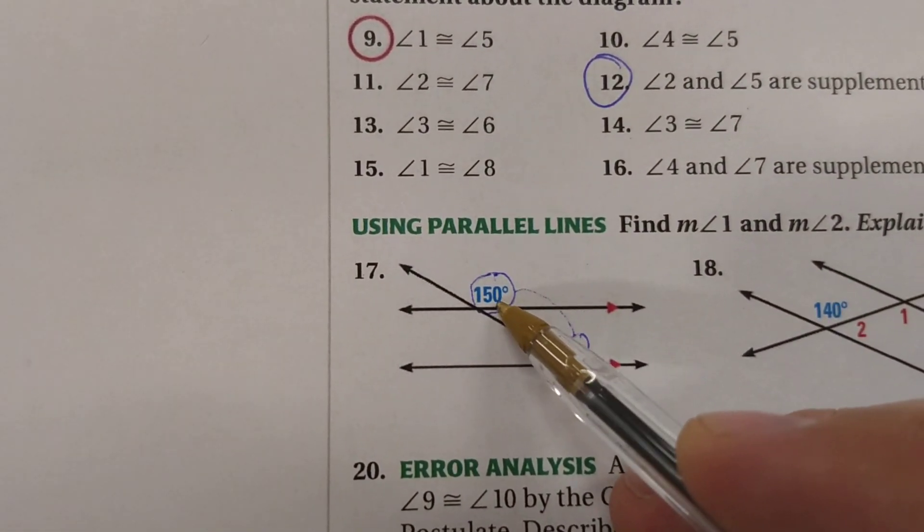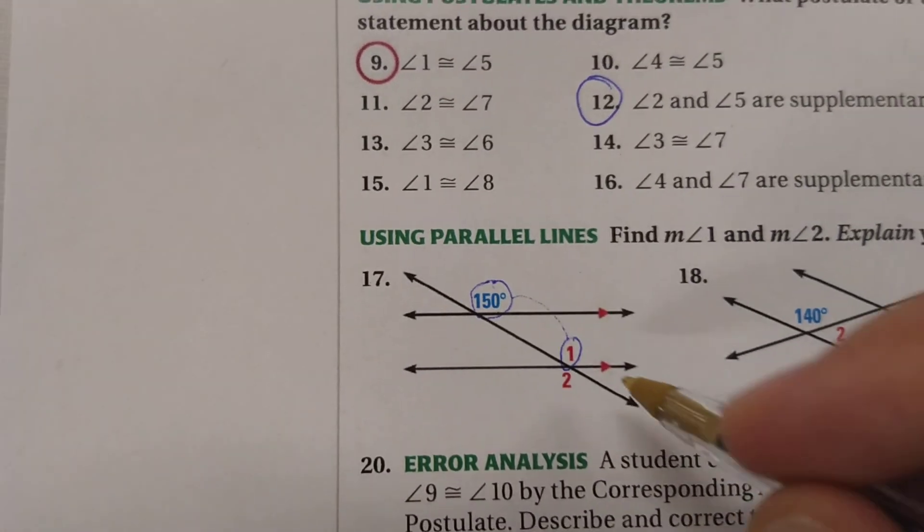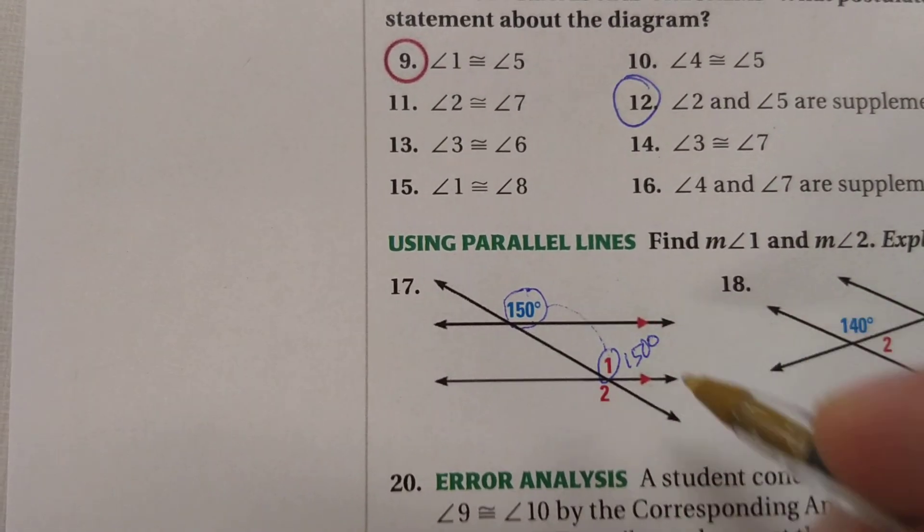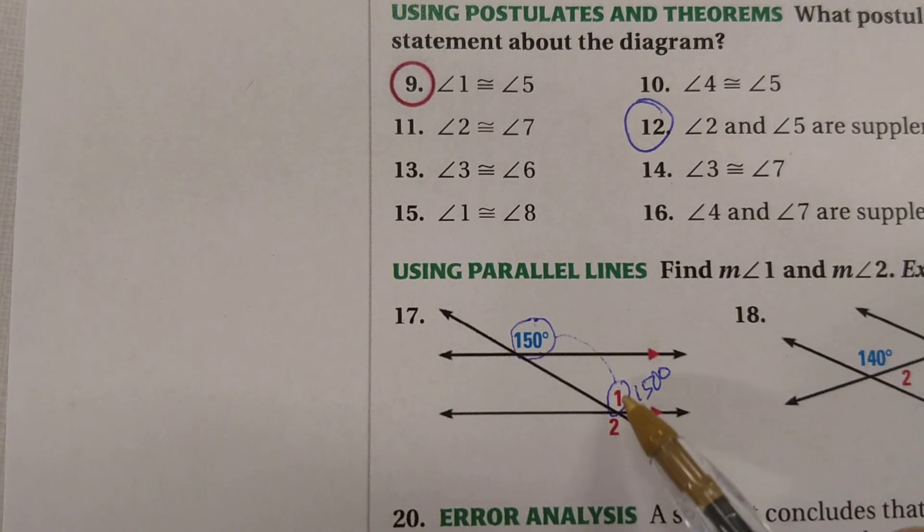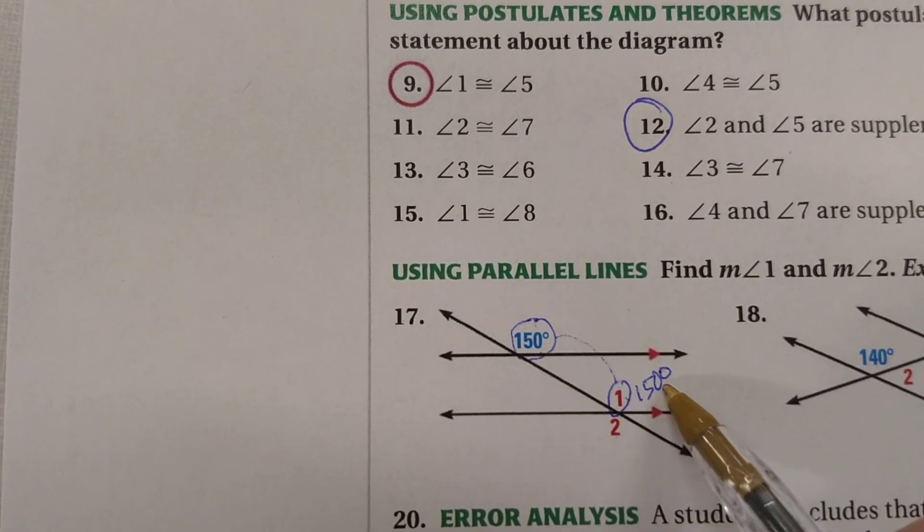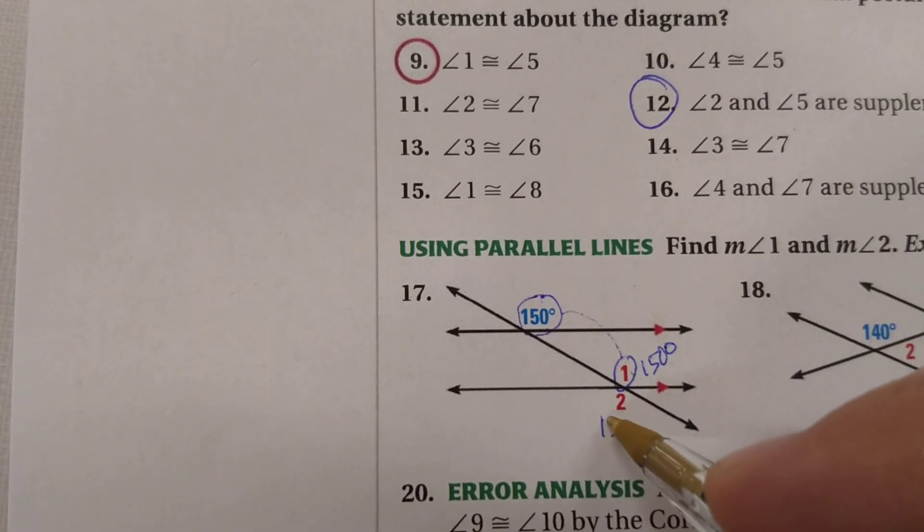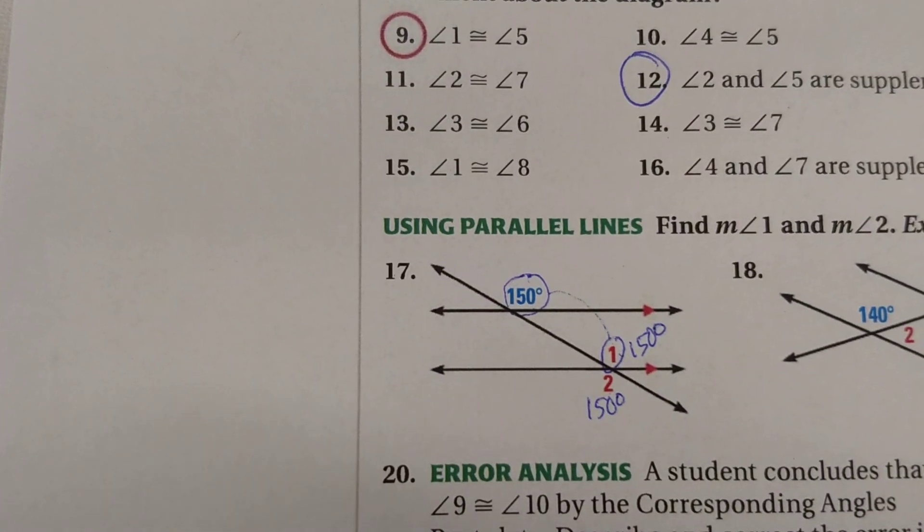So since this is 150 degrees, this also has to be 150 degrees in here. And we already said 1 and 2 have to be the same. So since angle 1 is 150 degrees, angle 2 also has to be 150 degrees.